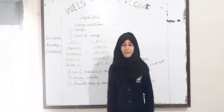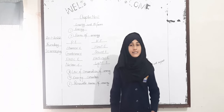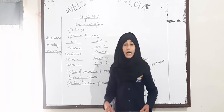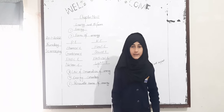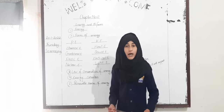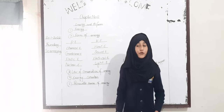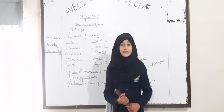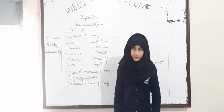Assalamualaikum, my name is Moumina Hakim. I am reading in class 6. Energy is the ability to do work. Birds use energy to fly, plants use energy to make food and to grow. Light and sound are forms of energy.